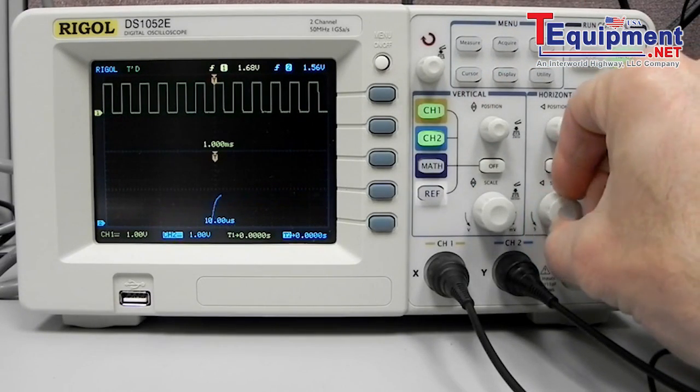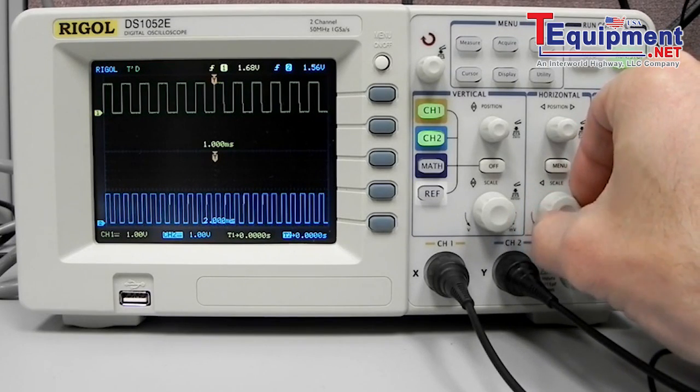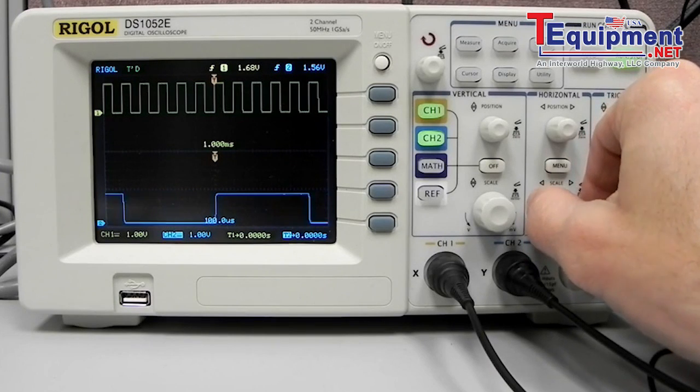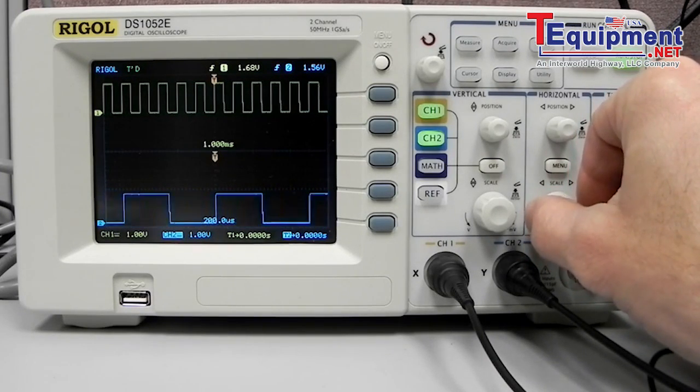We can do the same to channel two. It can be very useful if you have two independent signals coming in and you want to have them on different time scales so you can zoom into different features or different areas of that particular waveform of interest.